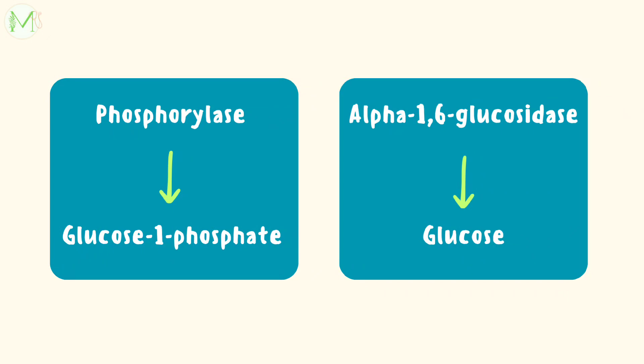At this stage, the ratio of glucose-1-phosphate to free glucose is about 8 to 1. The de-branching enzyme releases glucose, whereas glycogen phosphorylase produces glucose-1-phosphate, and hence this ratio.